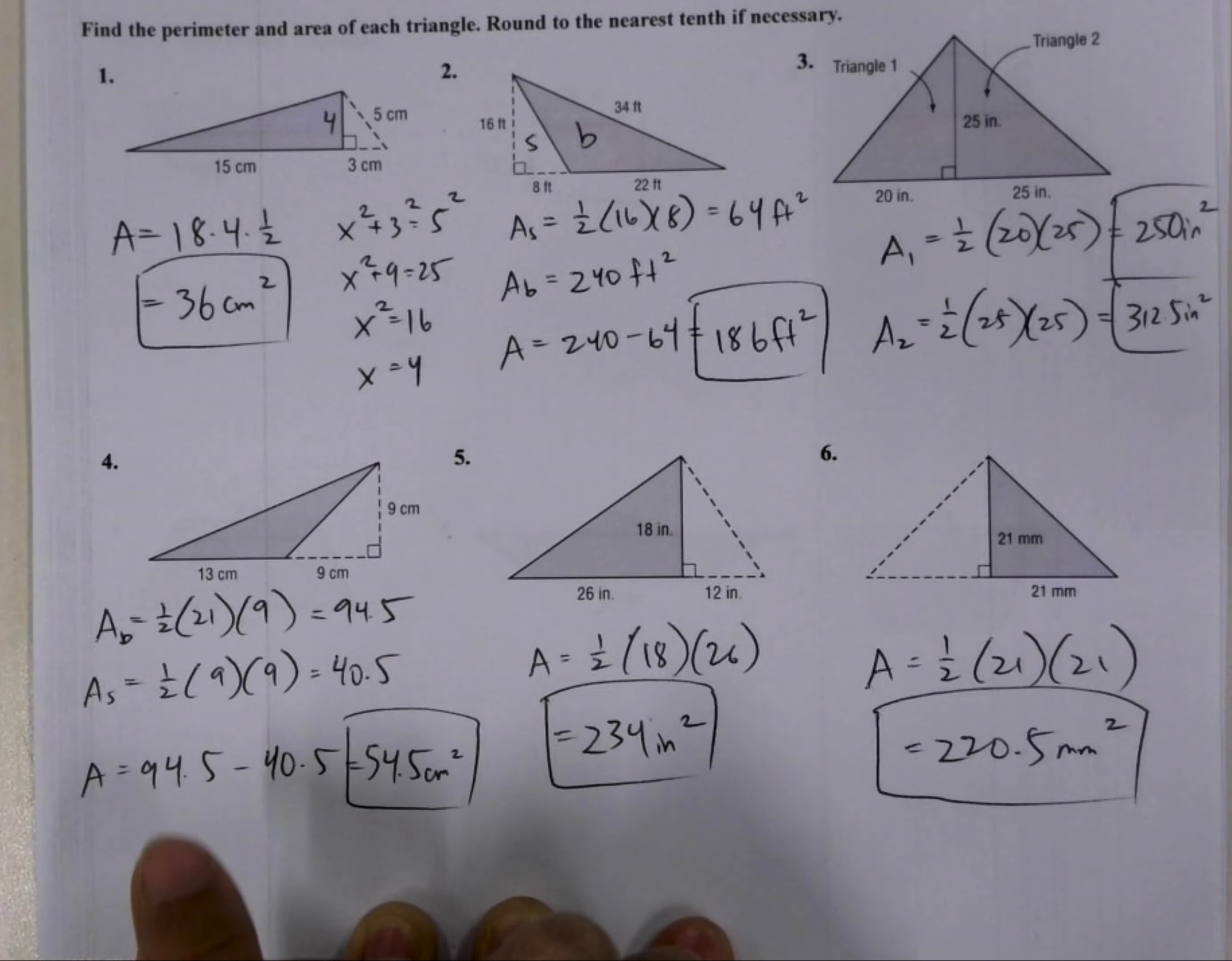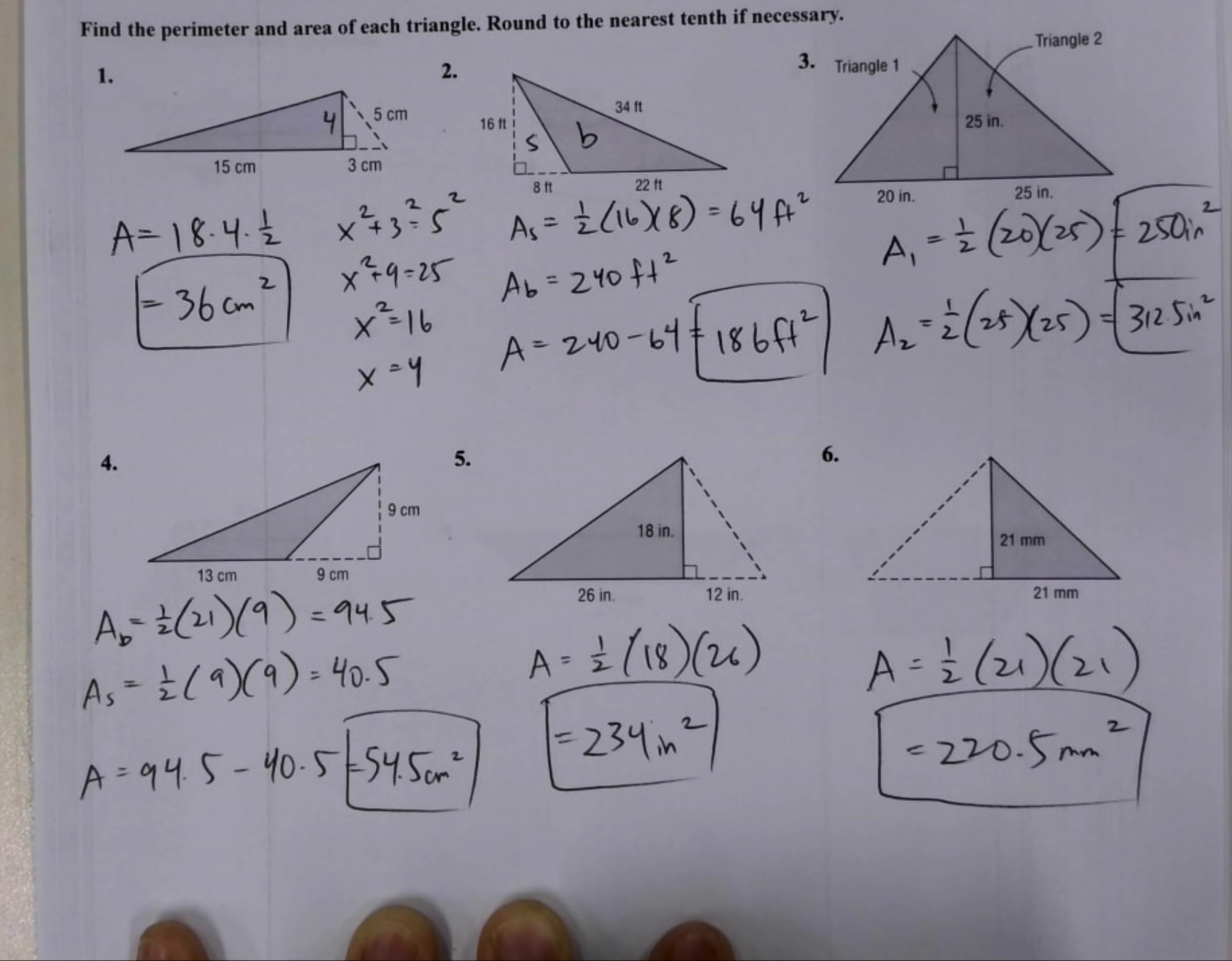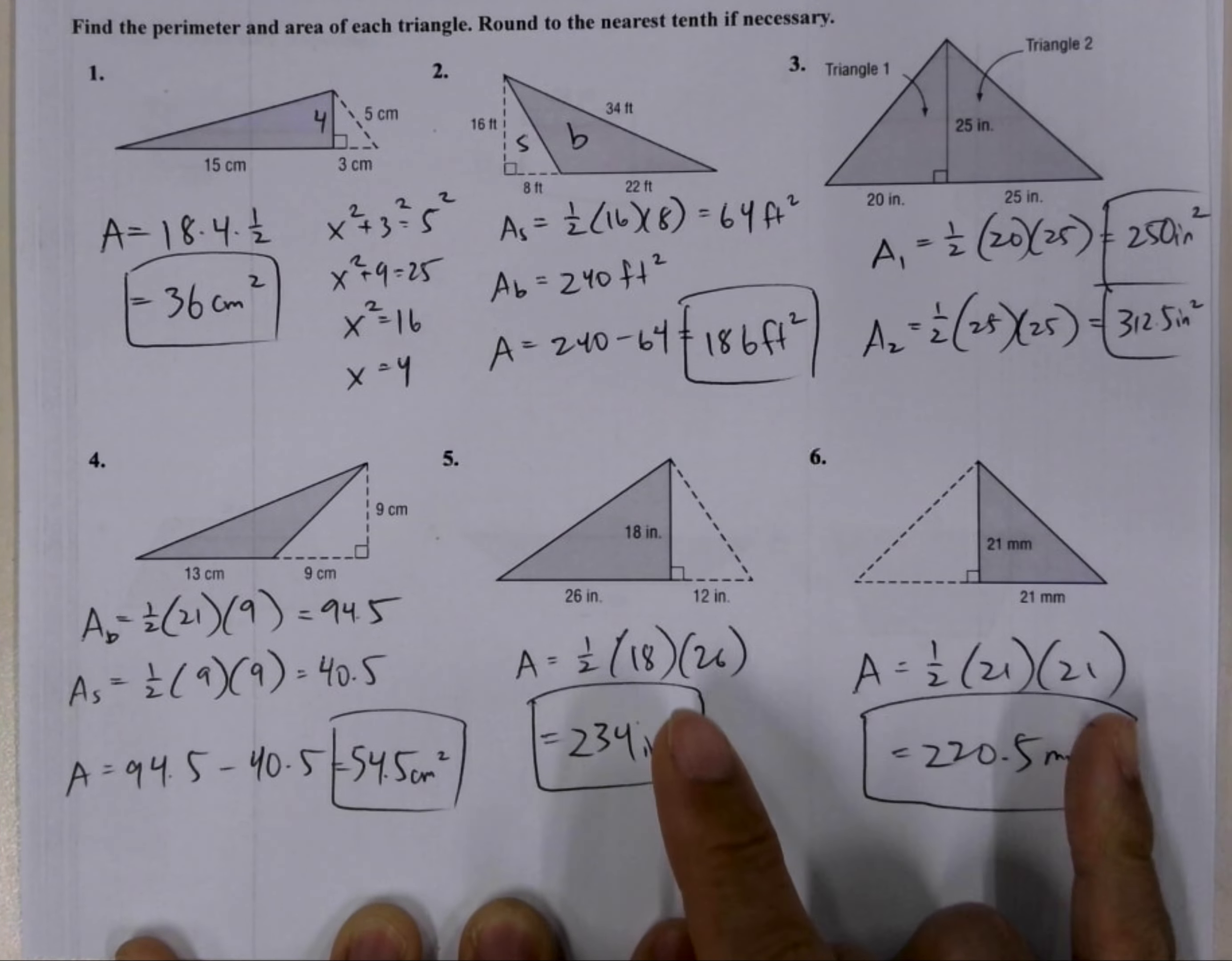This one here again is big minus small equals the shaded triangle, and then these two were fairly straightforward.